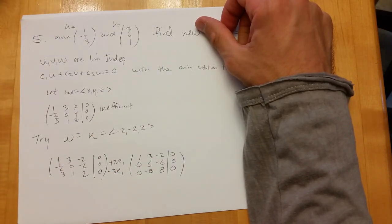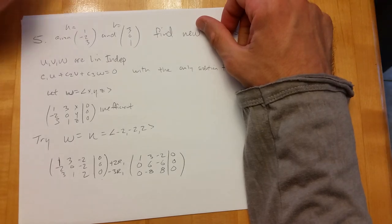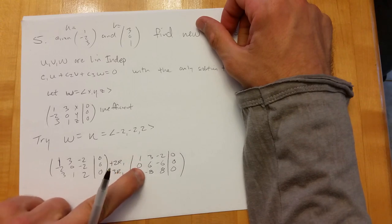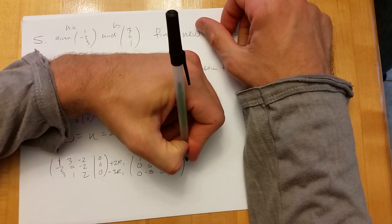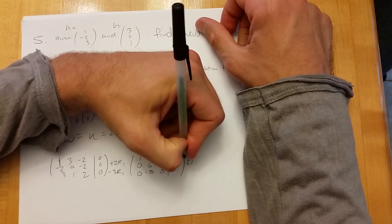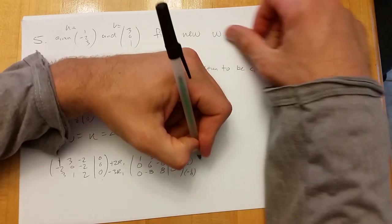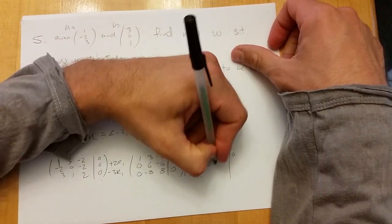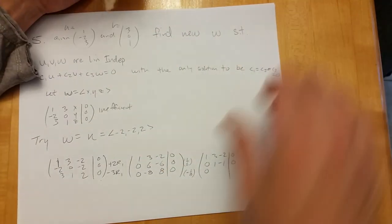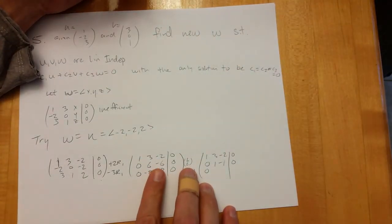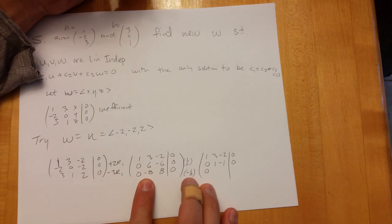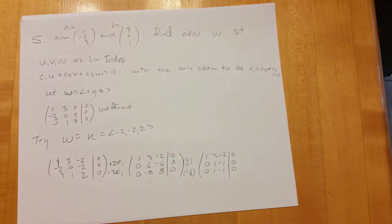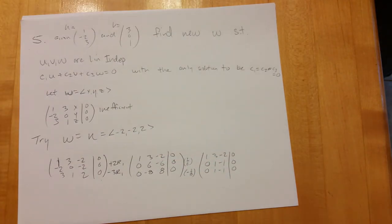It would be surprising if we got a free variable here. That's what we're hoping we don't get. So multiply by negative one-sixth, multiply by negative one-eighth. So we got one, negative one down here. This is not good. Something that's not right.